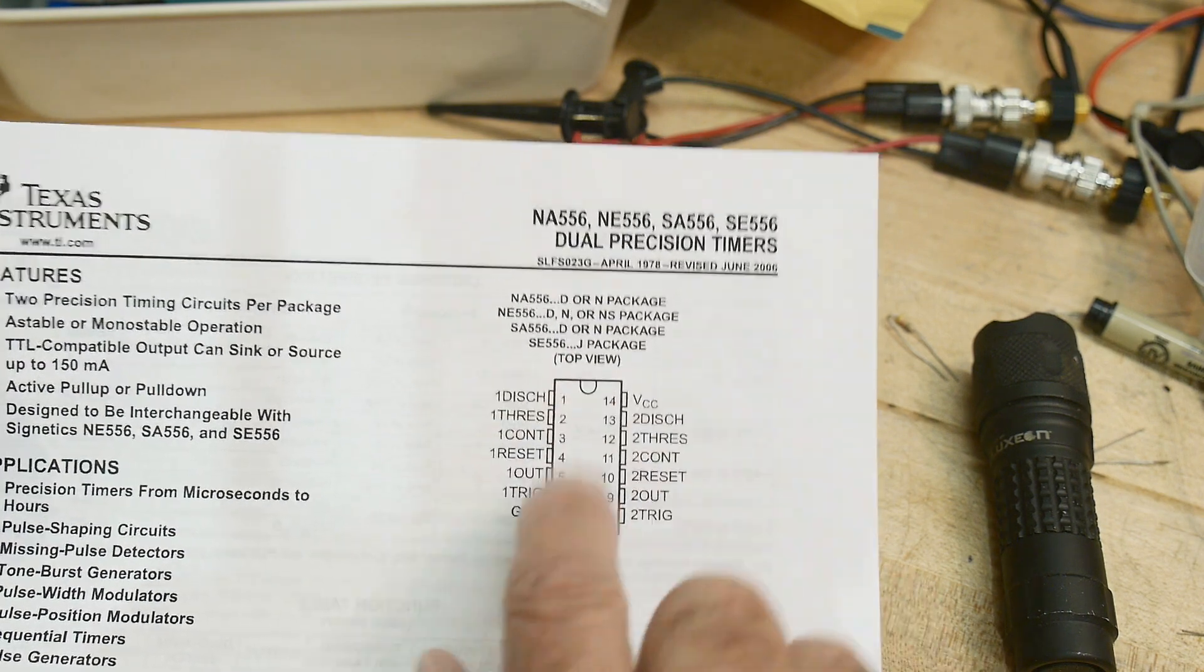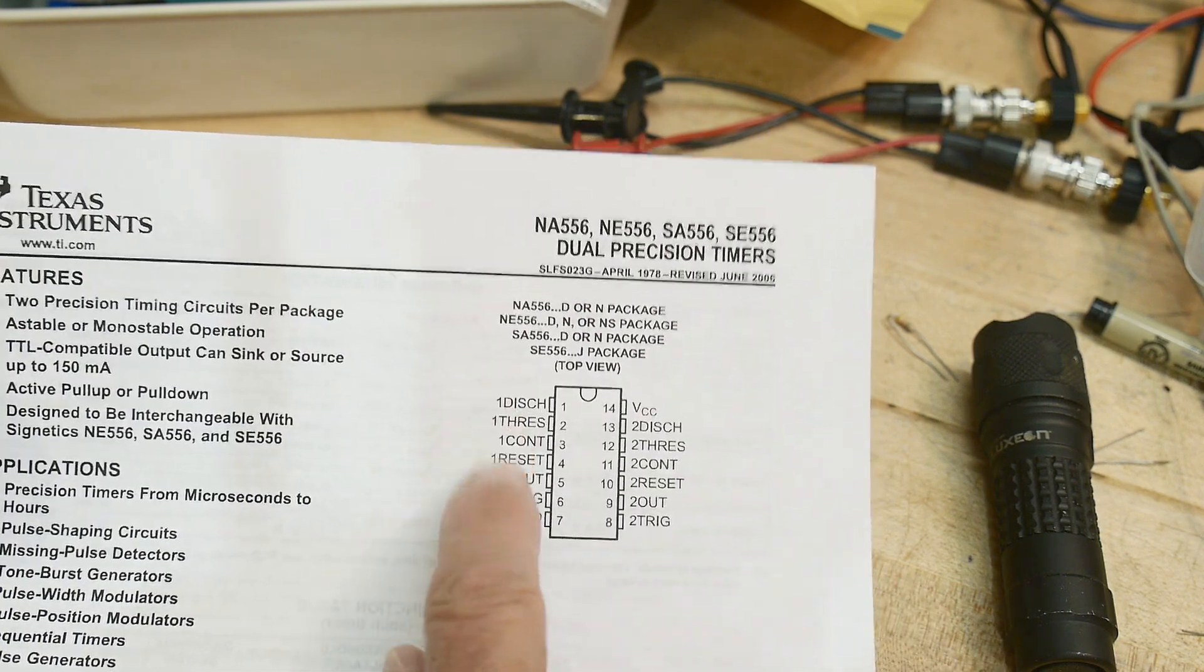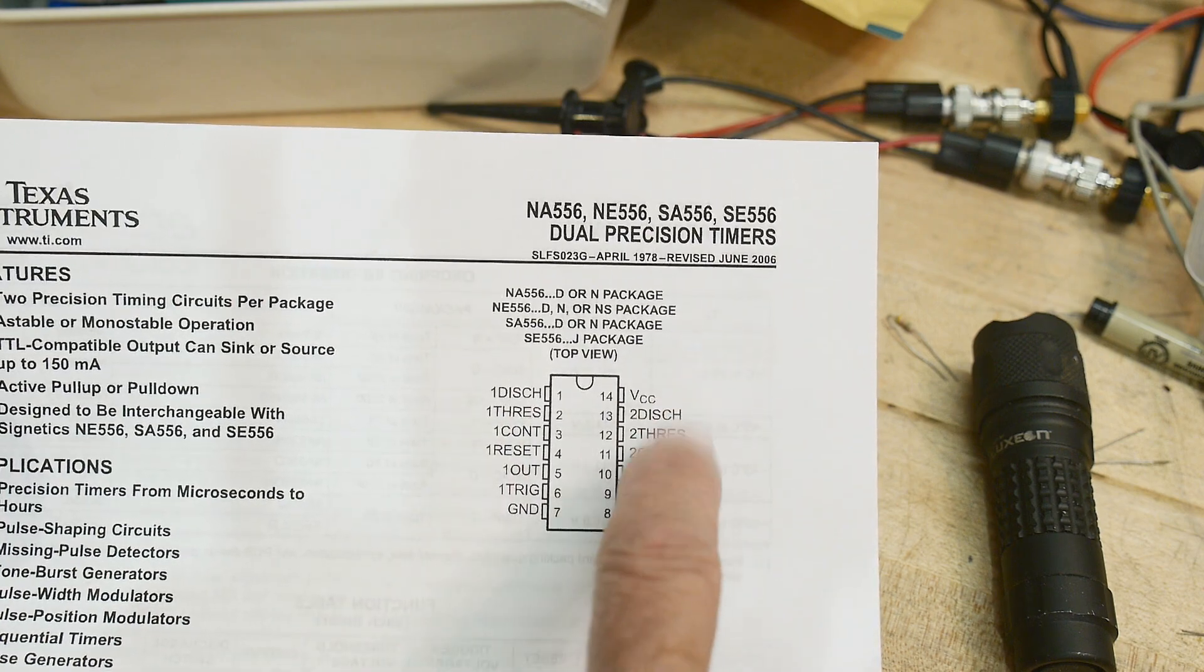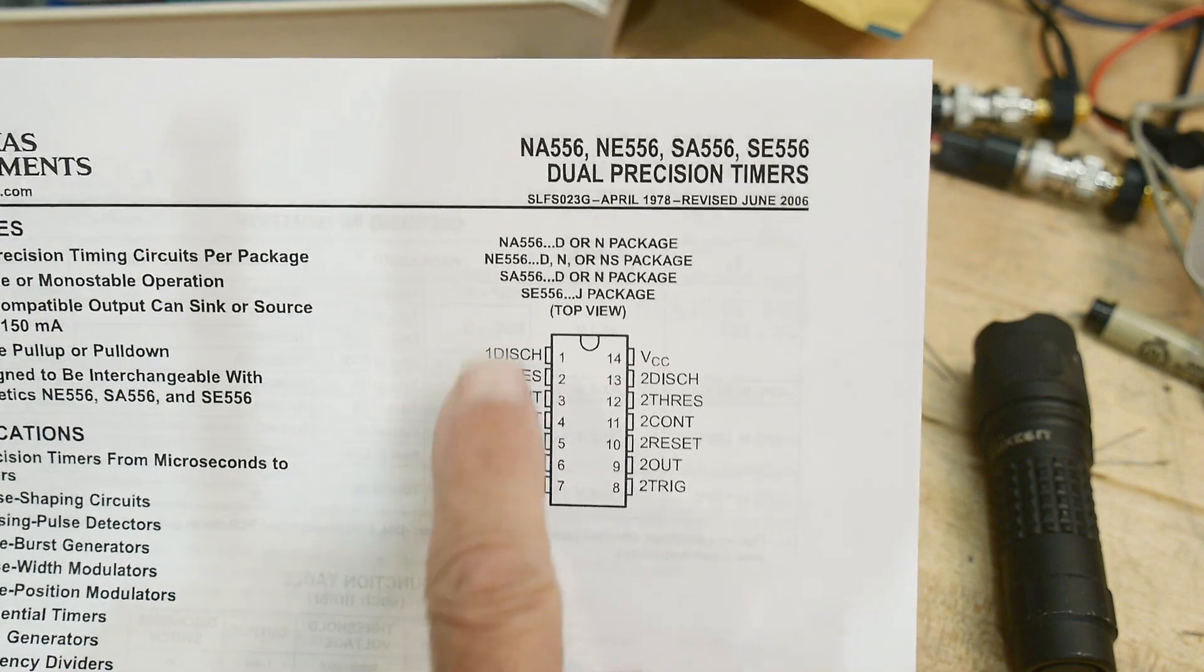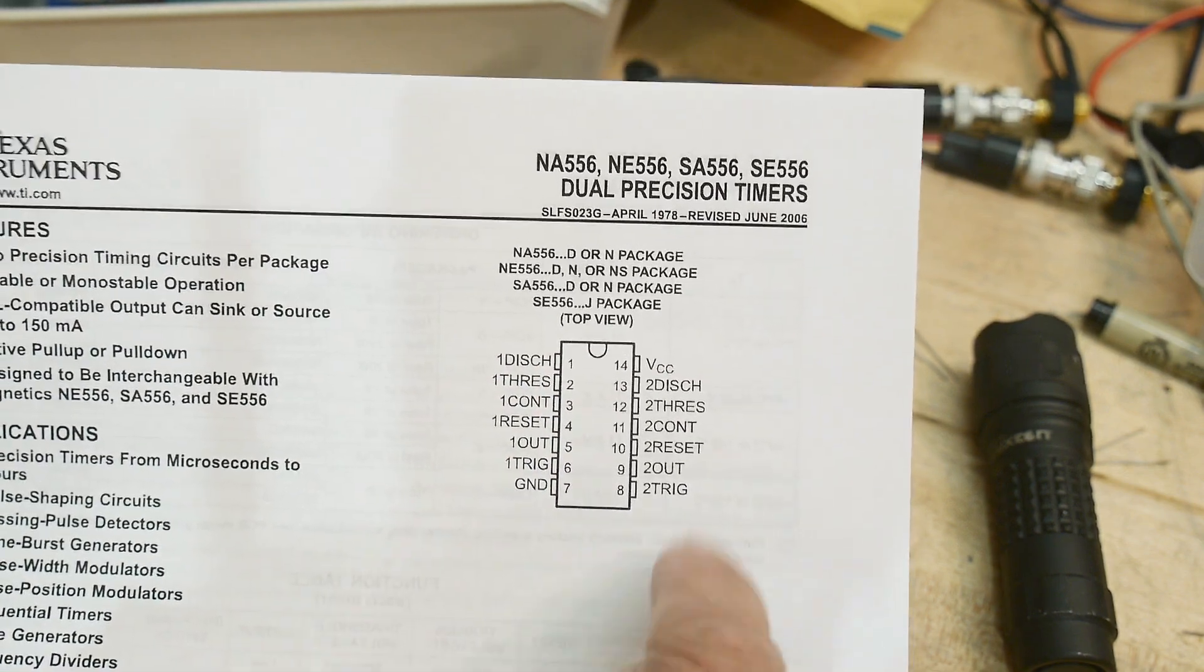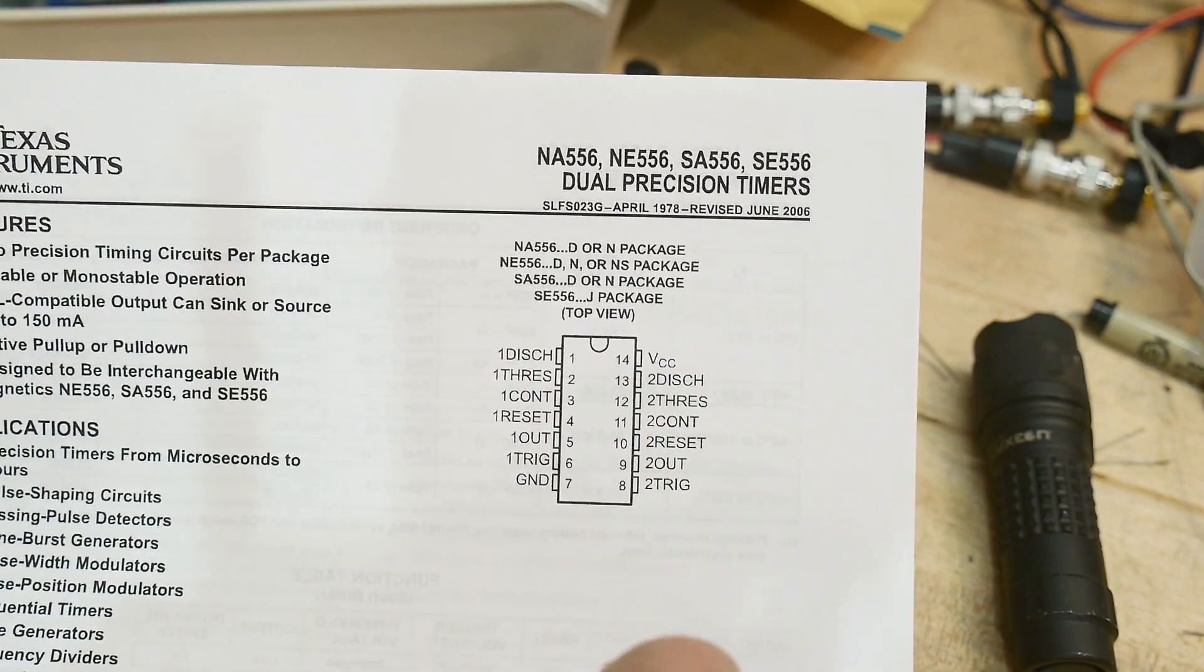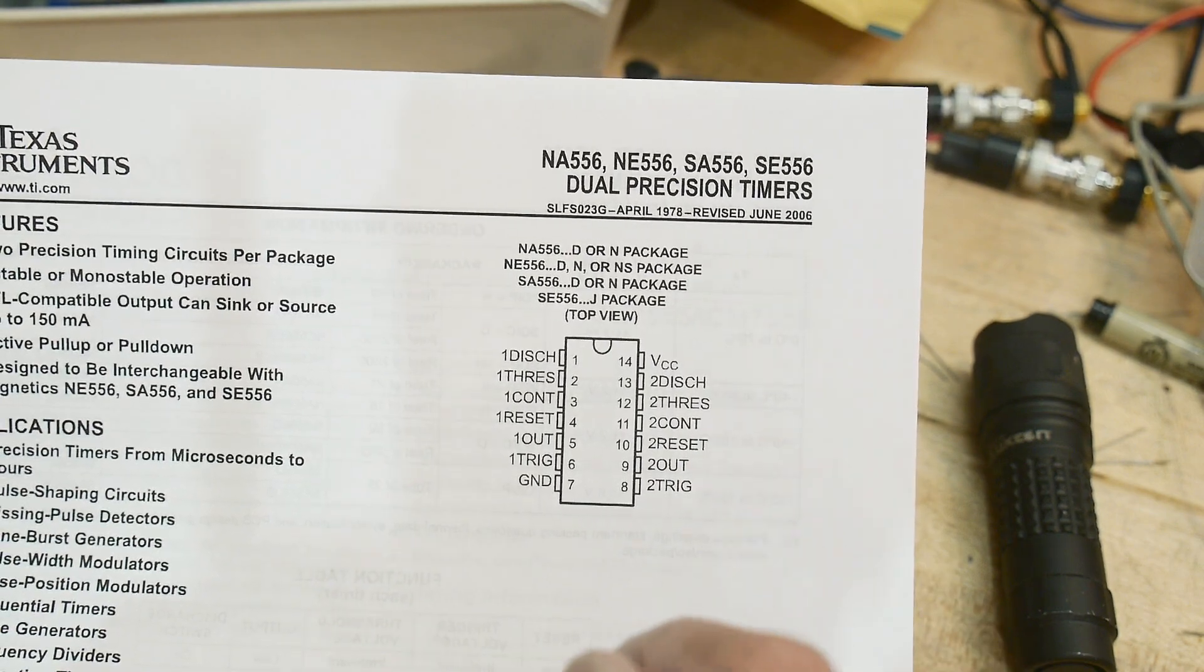So on this half of the chip it's a 555 and on this half of the chip it's a 555. So you see all the number ones, that has to do with the number one 555, and over here we have the number two 555. So it's pretty cool.